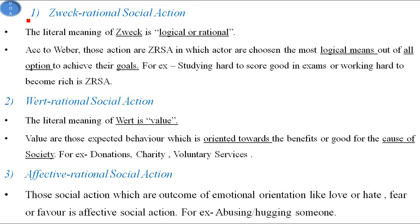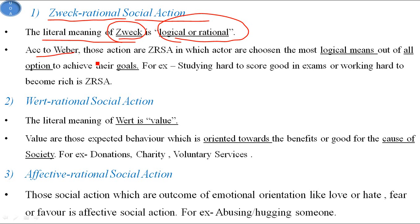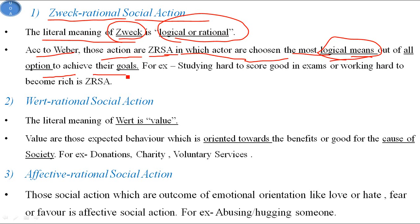The first is Zweckrational social action. The literal meaning of Zweck is logical or rational. According to Weber, those actions are Zweckrational in which actors choose the most logical means out of all available options to achieve their goals. For example, studying hard to score good marks in an exam, or working hard to become rich, is a Zweckrational social action.